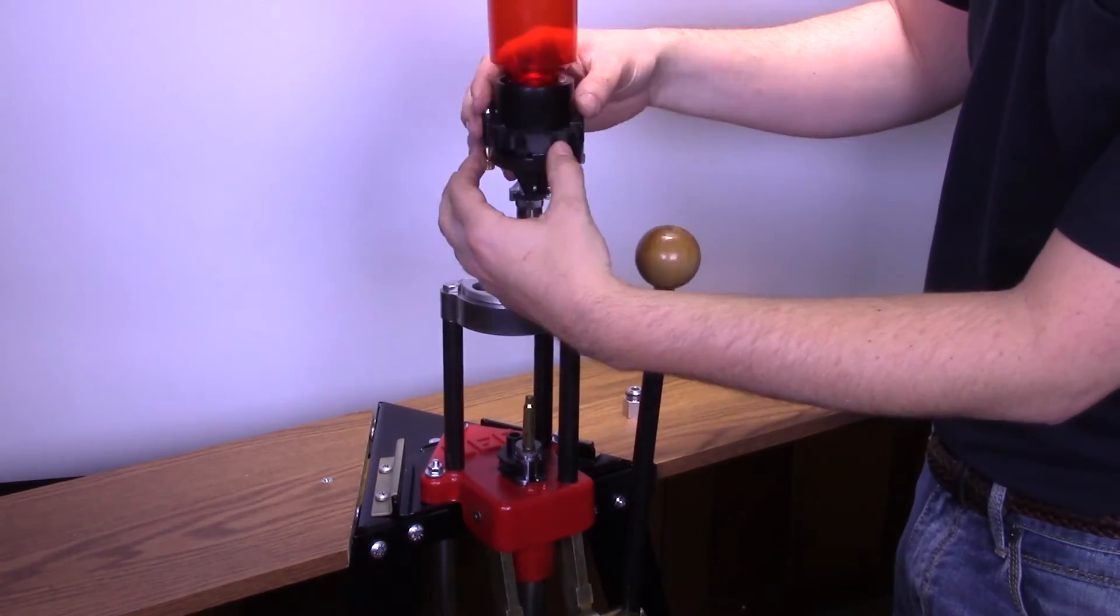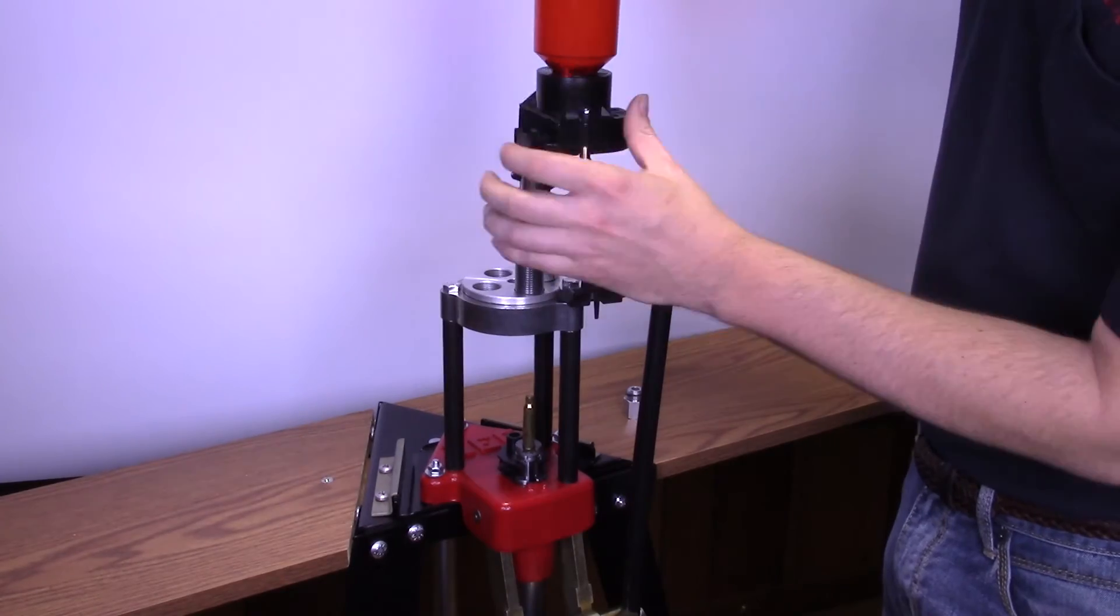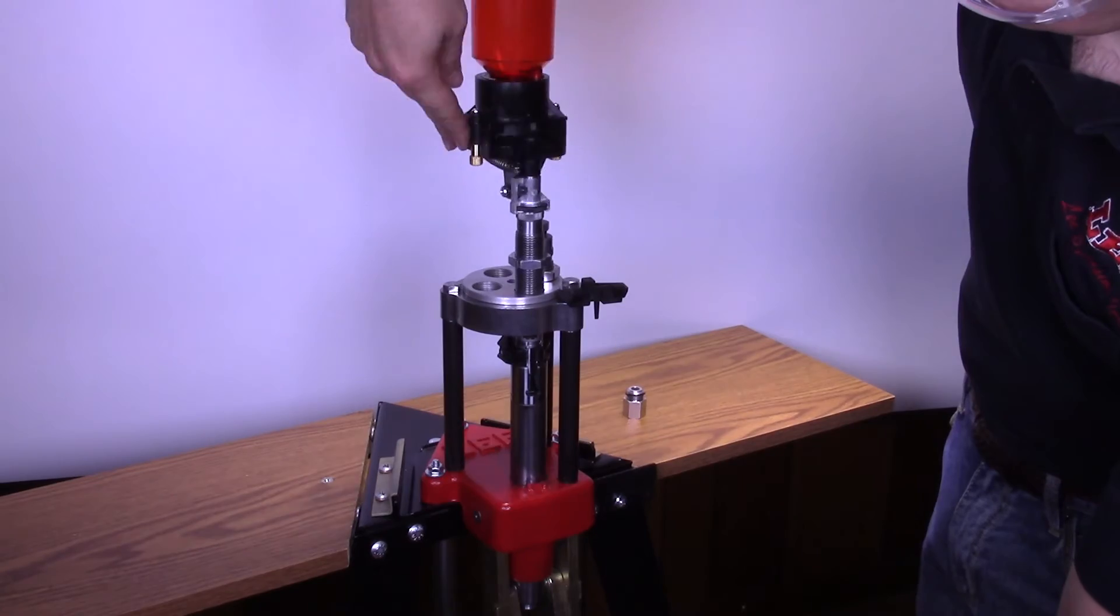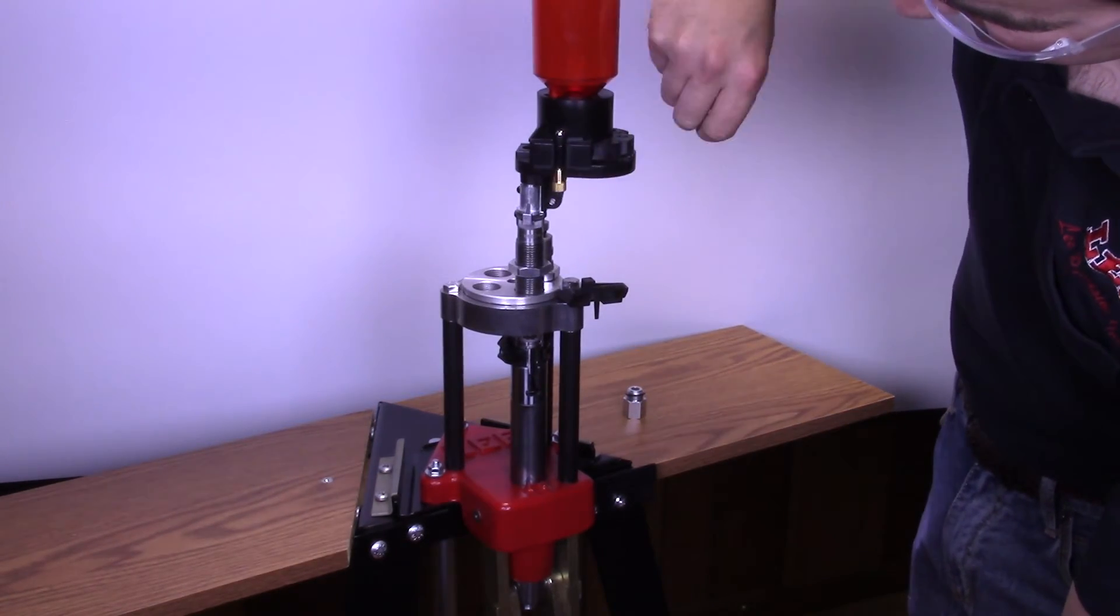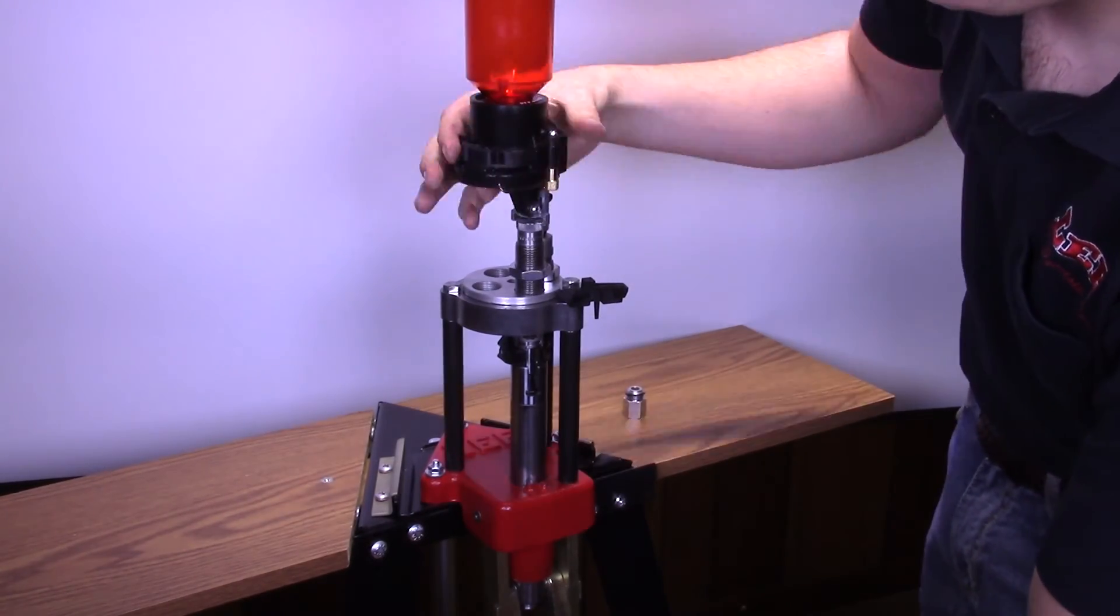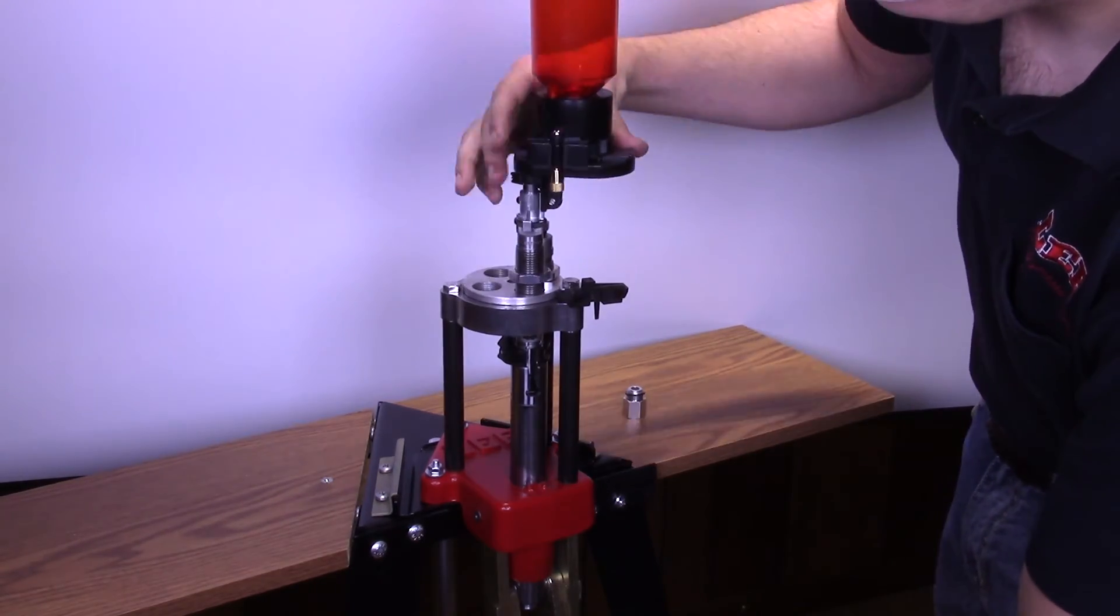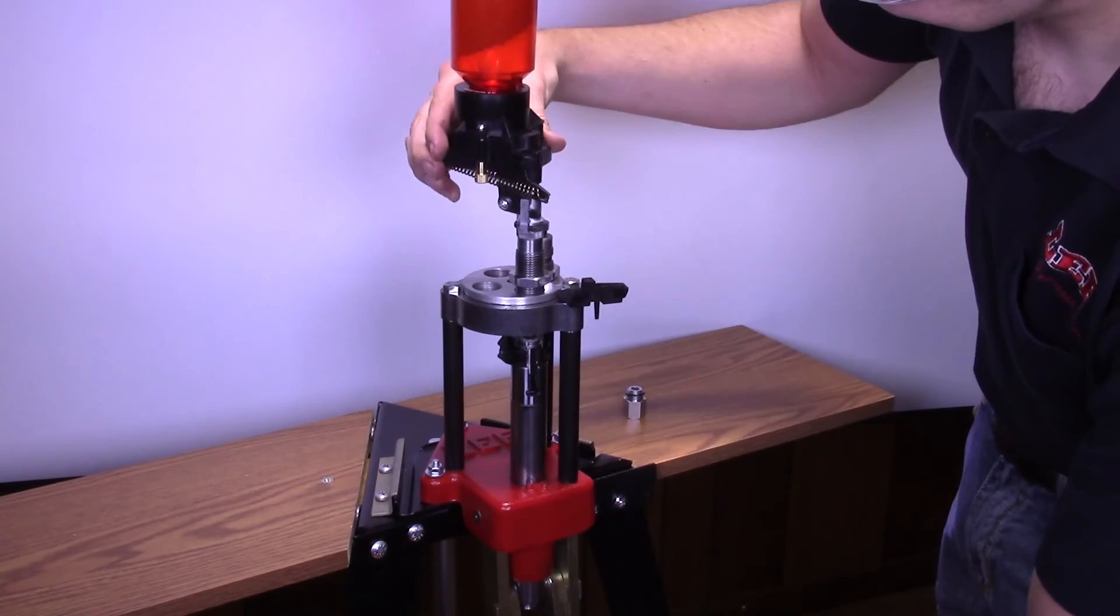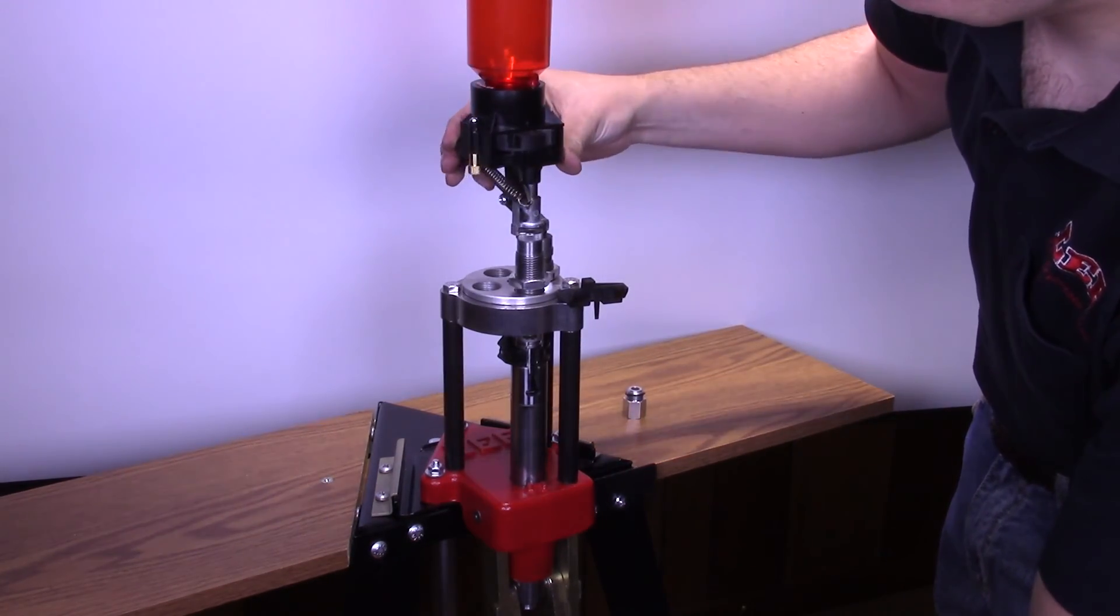Screw the unit into the press just enough to fully move the disc or drum to the dump position. This occurs when the selected cavity aligns with the drop tube.